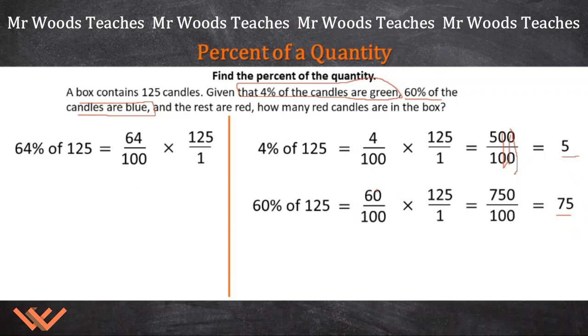So what we need to do is it's going to be a subtraction problem, because we're subtracting the number of green candles plus the number of blue candles from 125 to find out how many red candles there are in the box.